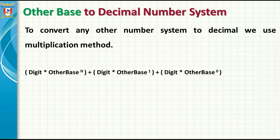But if you want to convert other base systems to decimal number system, then we have to use the multiplication method. We have to multiply each digit by the base of that number system raised to the power of 0, then the next digit to the power of 1, and so on up to the power of n.